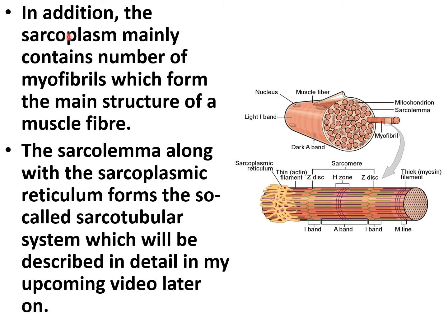The sarcoplasm mainly contains a number of myofibrils, which form the main structure of a muscle fiber. The sarcolemma along with the sarcoplasmic reticulum forms the sarcotubular system, which will be described in detail in an upcoming video.